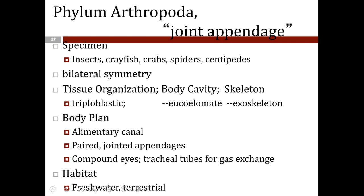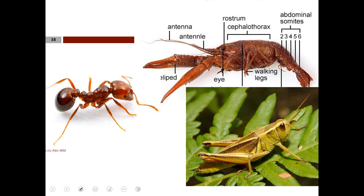Next is Phylum Arthropoda, which includes centipedes, spiders, crabs, crayfish, and insects — obviously the most numerous animal group. They exhibit bilateral symmetry and are triploblastic pseudocoelomates. They have an exoskeleton, a complete digestive tract with mouth and anus, paired jointed appendages, compound eyes, and tracheal tubes for gas exchange. They are found all over the world — ocean, fresh water, and terrestrial environments. Their jointed appendages are a key distinguishing feature.